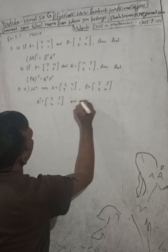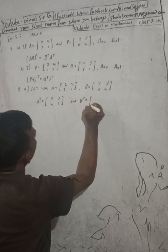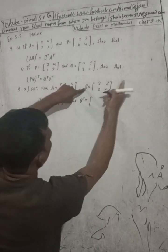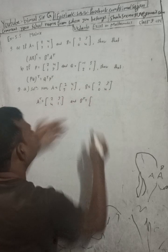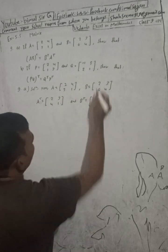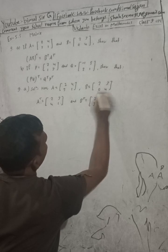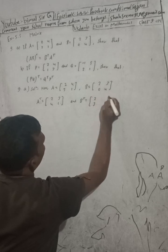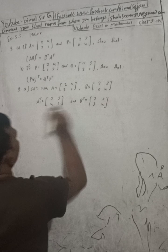In the same way, B transpose: interchange row and column. The first row [2,3] becomes the first column, and the second row [0,4] becomes the second column. So B transpose is [2,0; 3,4].